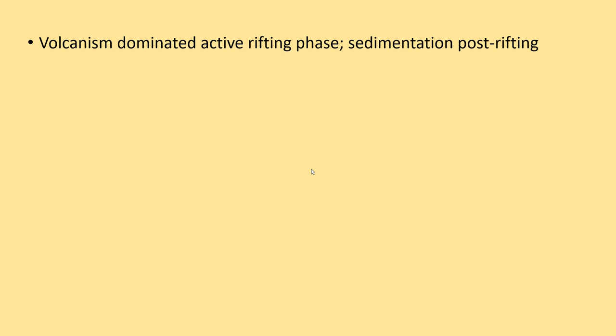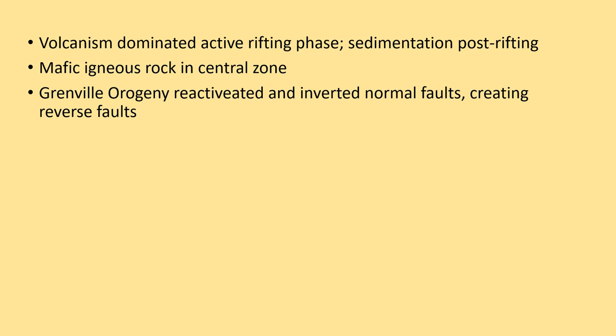The article notes that after a decade or more of research, a lot of the volcanism occurred during the active rifting phase. Once rifting was done, you had uplift of the horsts and erosion, and sedimentation after rifting was largely erosion of those horsts that fell down and was deposited within the graben. In the central zone, there was an overabundance of mafic igneous rock — mafic meaning predominantly composed of magnesium and iron, dark in color, low-viscosity lava — common when you have very thin crust during rifting or when you have a mantle plume.